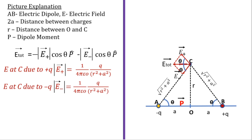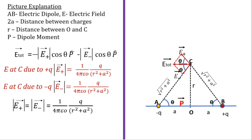The field due to minus Q at C will be 1 over 4 pi epsilon naught times q over r squared, where r squared becomes r squared plus a squared because these are similar triangles — CB equals AC equals root of r squared plus a squared. Squaring this, the root gets cancelled and we get r squared plus a squared. We can see that E plus equals E minus, and the value is 1 over 4 pi epsilon naught times q over r squared plus a squared.